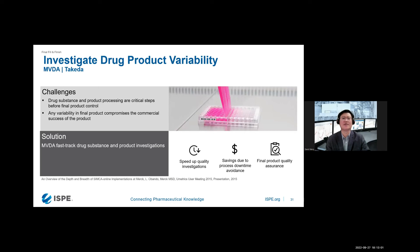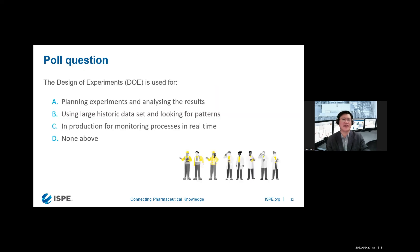The last manufacturing example is from fill and finish — the last step. Here we may also consider batch genealogy to trace back raw materials. This was a brief overview, but I've tried to cover data analytics applications across different areas.